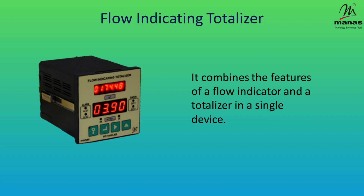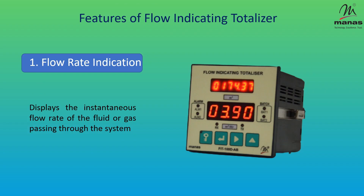The main features of a flow indicating totalizer include flow rate indication — it displays the instantaneous flow rate of the fluid or gas passing through the system.